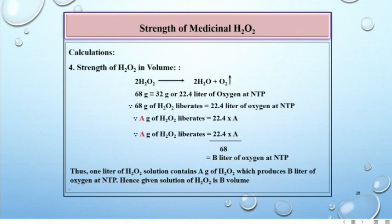Hence, A grams of H2O2 liberates 22.4 times A divided by 68, which is B liters of oxygen at NTP. Thus, 1 liter of H2O2 solution contains A grams of H2O2 which produces B liters of oxygen at NTP. Hence given solution of H2O2 is B volume.